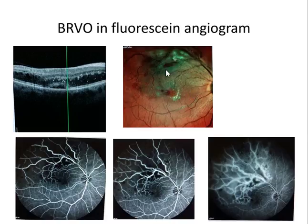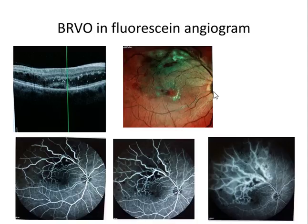The second image is a multicolor image showing white areas which are cotton wool spots and some retinal hemorrhages, with exudates in the macular area. These findings are along the distribution of a particular vein, which is why this is a supra-temporal branch retinal vein occlusion with macular edema.